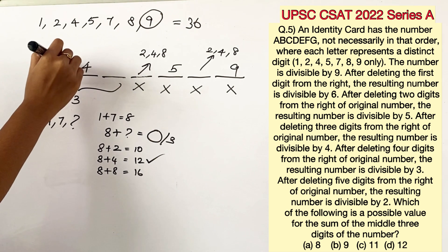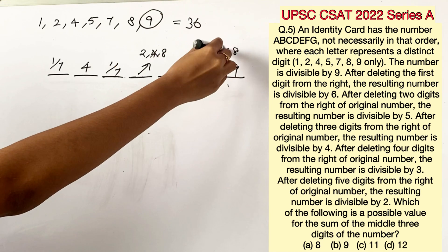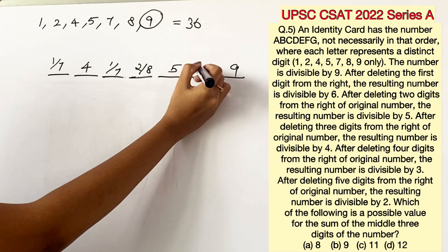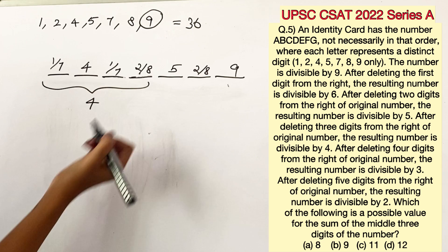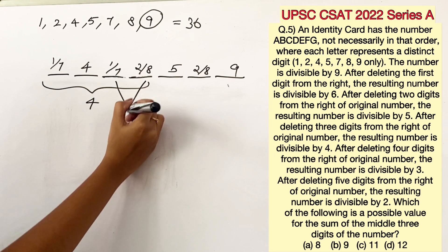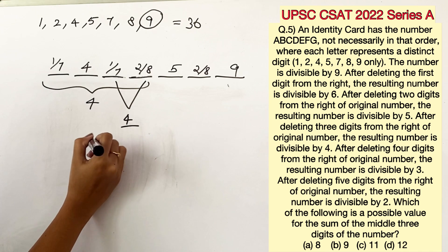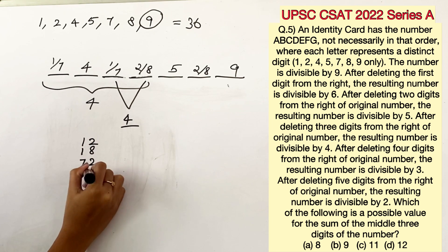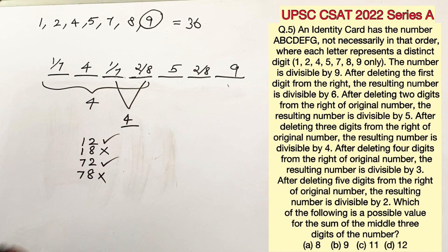This is either 1 or 7 and this is also either 1 or 7. 4 cannot take this place or this place. So this can either take 2 or 8. From the given data we know that after deleting 3 digits from the right the resulting number is divisible by 4. And we know for a number to be divisible by 4 only the last 2 digits should be divisible by 4. So let's write down all the possibilities which are 12, 18, 72 and 78. From this you can see that 12 and 72 are the ones which are divisible by 4. So with this we can conclude that this place can only be occupied by 2.